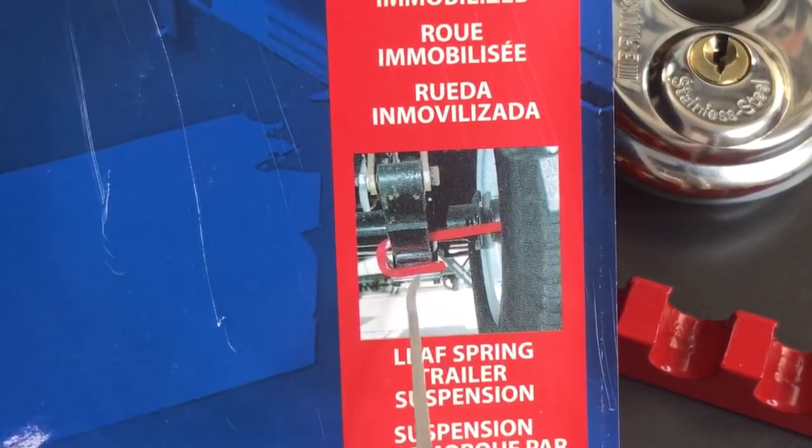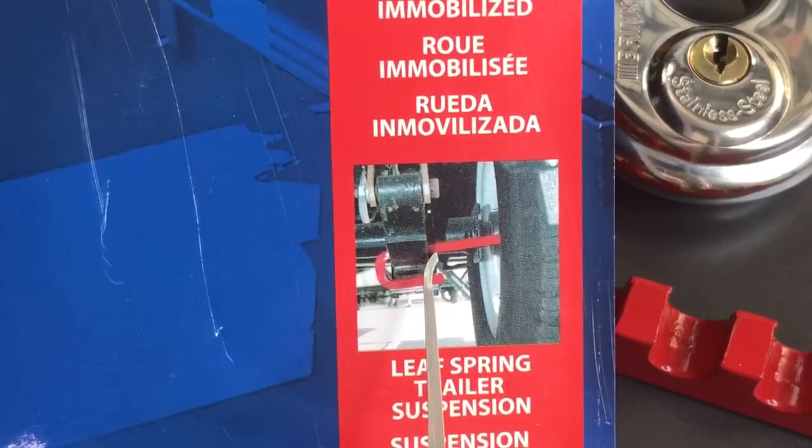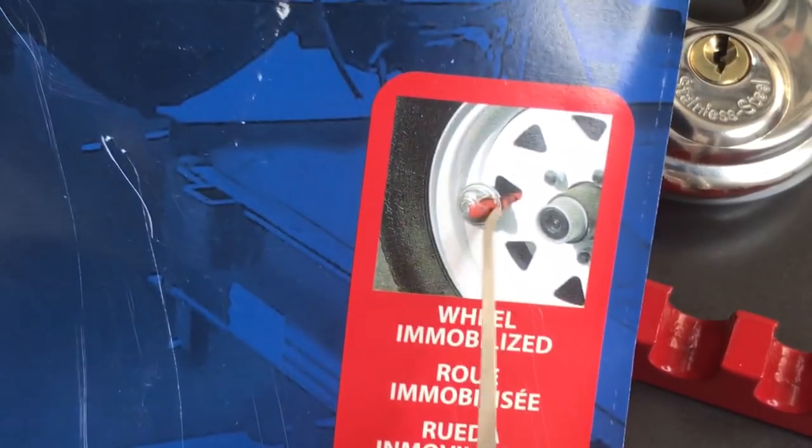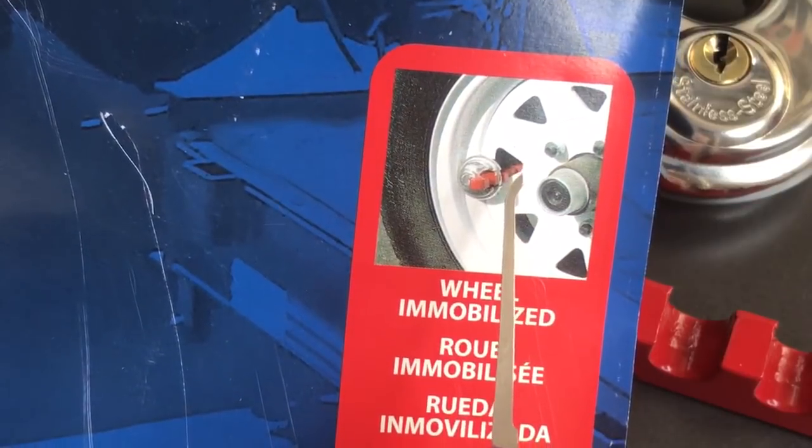You can see we have this hooked portion of the bar wrapped around the trailer leaf spring and then the end proceeds through the wheel where it's capped off by that disc padlock.